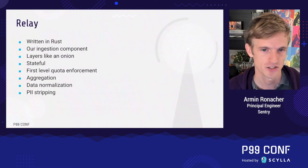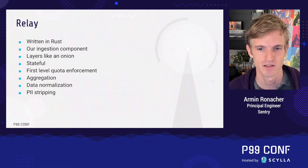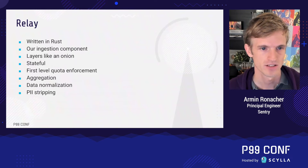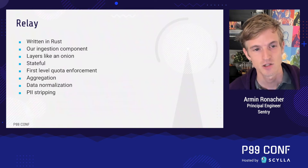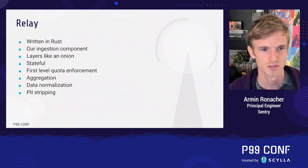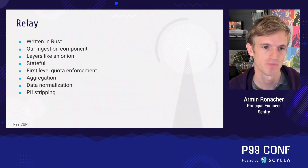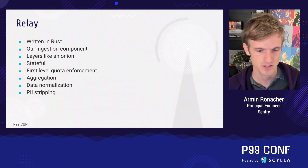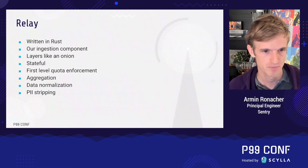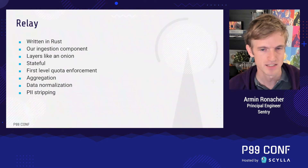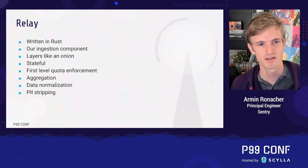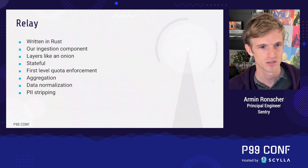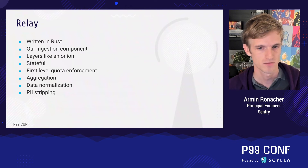Relay is our main ingestion system, written in Rust. It's a little bit like an onion — you can run more and more of these layers. It's quite stateful: it pulls in a lot of information from the system behind it. Unlike many systems where everything can talk to the database, Relay gets config updates and keeps them locally, then does some local processing in a relatively stateful way.